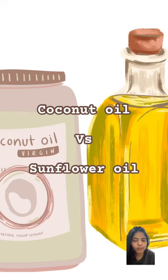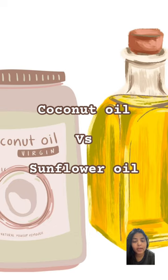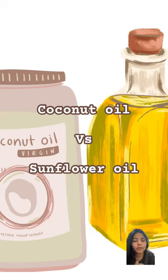Today we will see the difference between coconut oil and sunflower oil, and which one is better. Coconut oil is made of saturated fatty acids, so it cannot undergo trans isomerism or form a trans configuration.